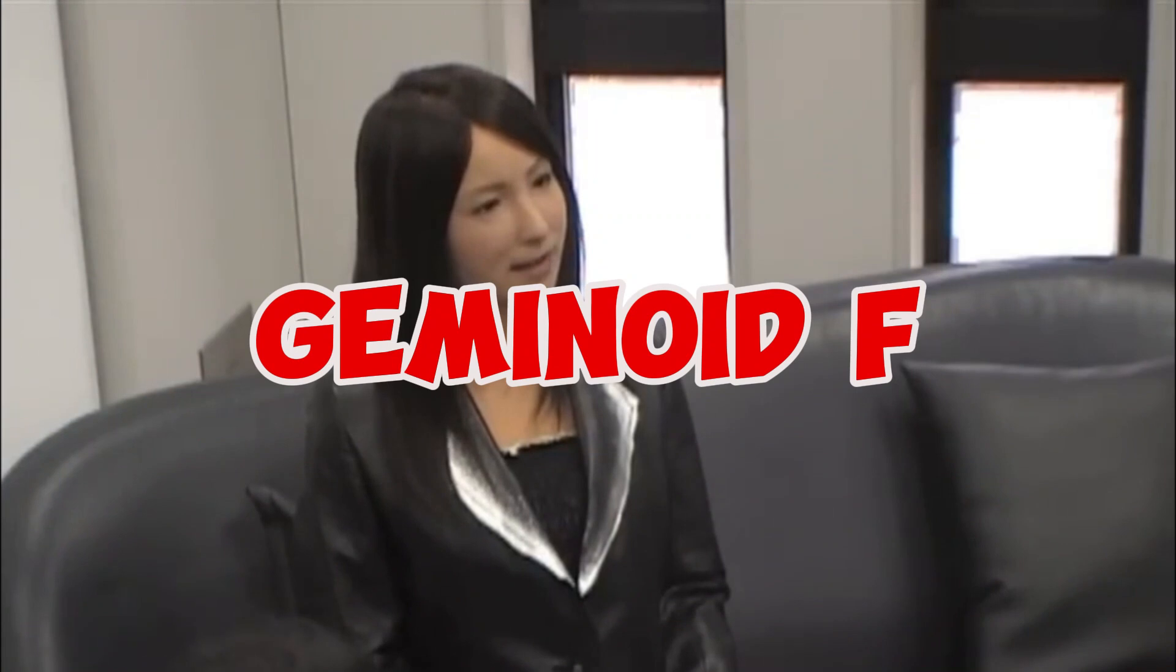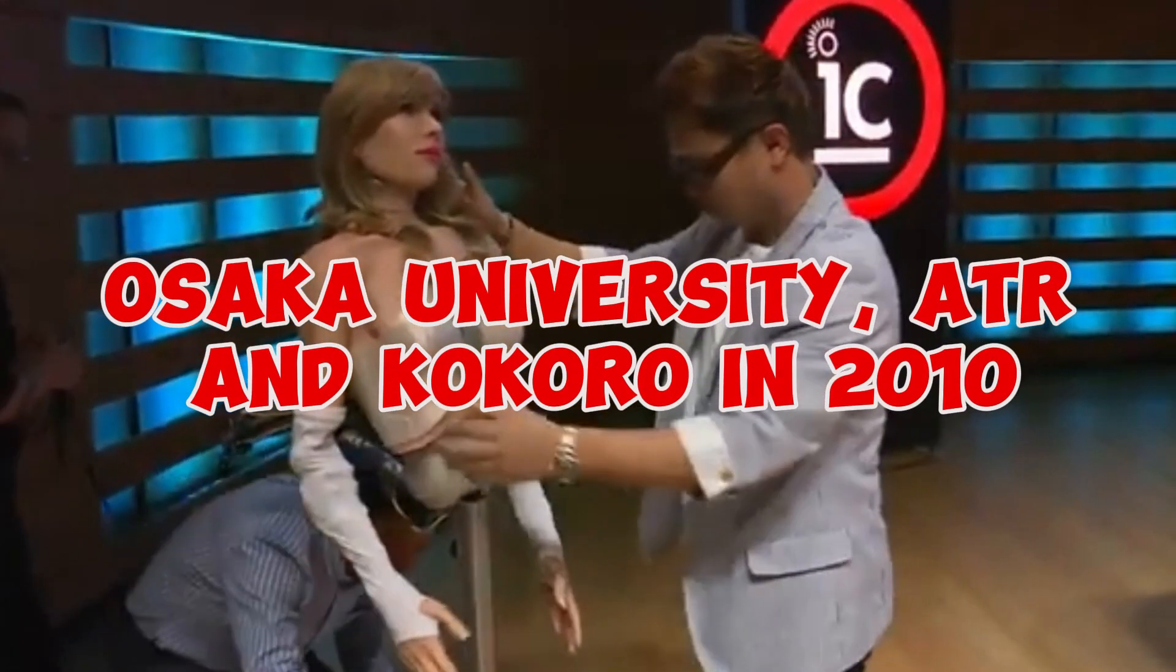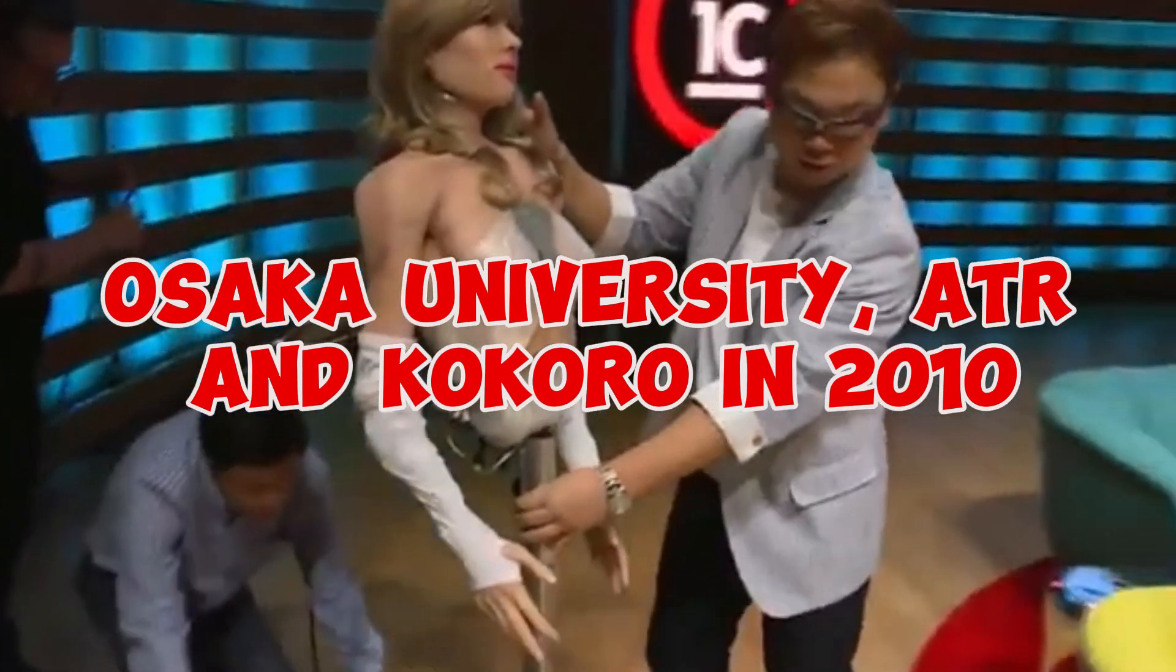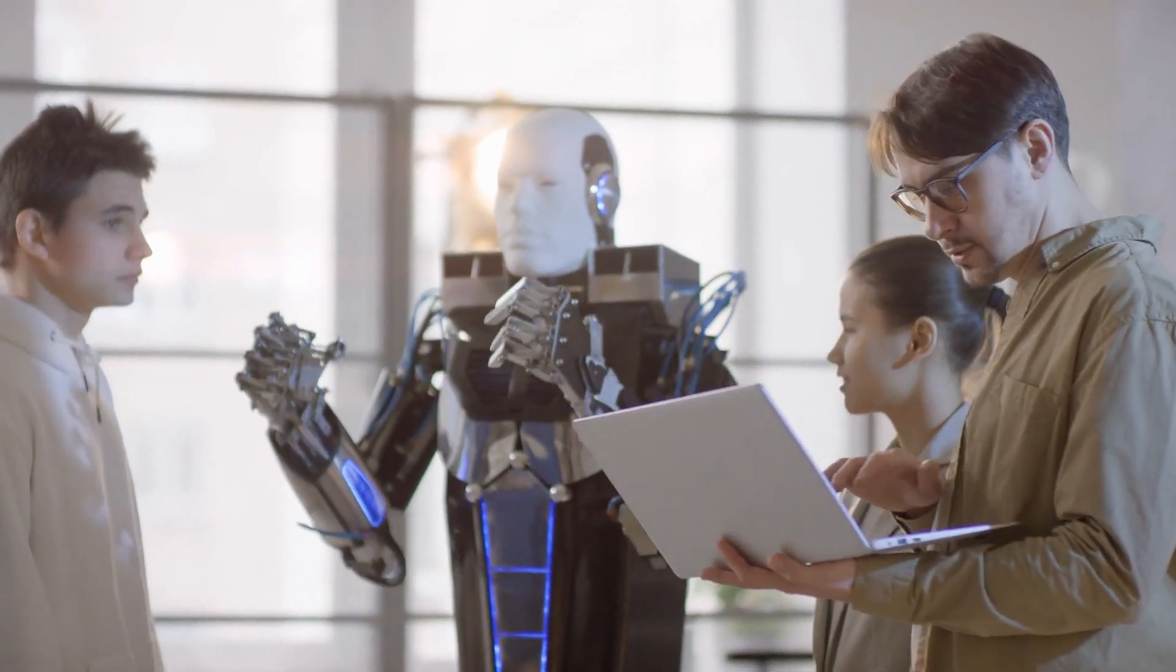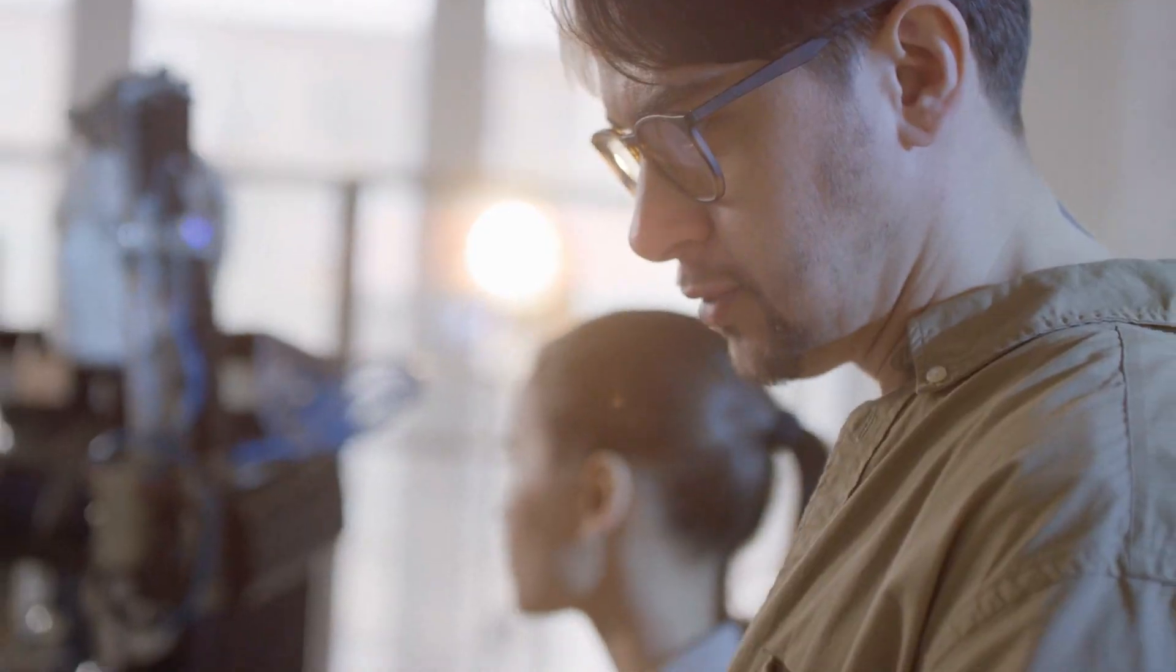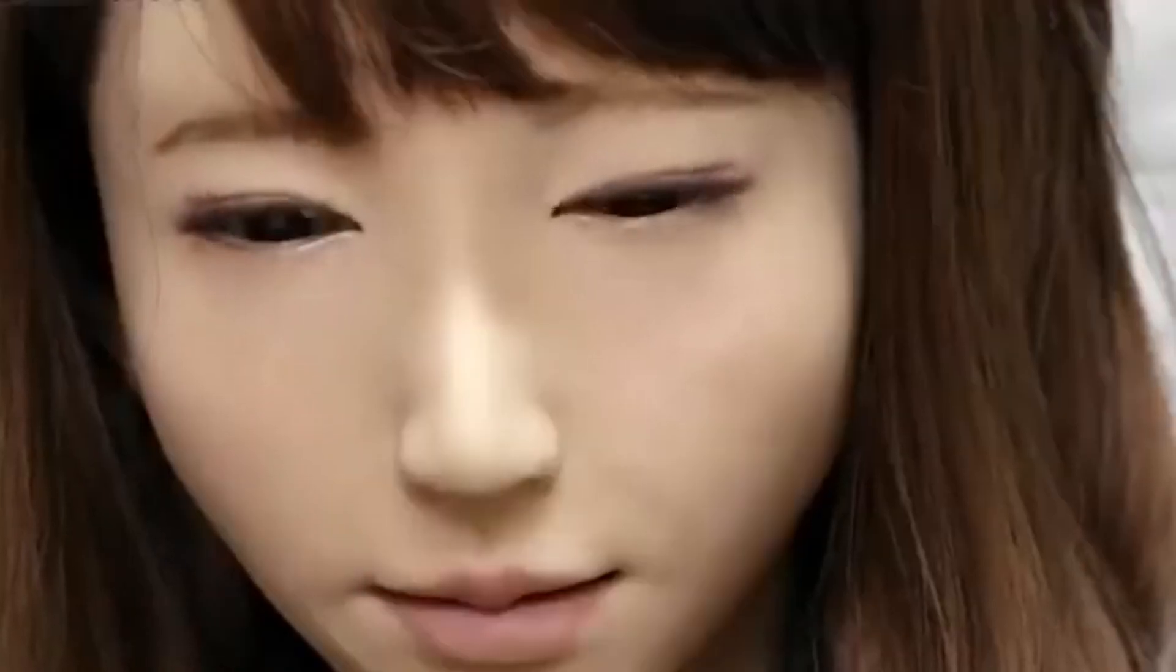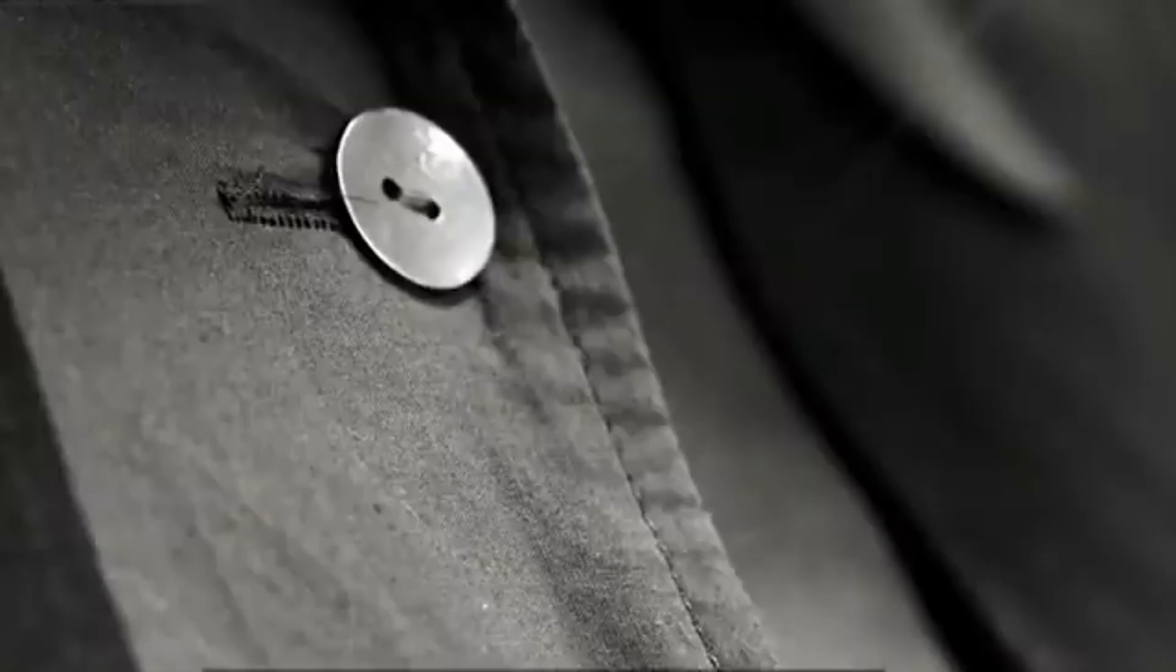Number 4. Geminoid F. Geminoid F, which was developed by Osaka University, ATR, and Kokoro in 2010, is widely regarded as the most beautiful humanoid human female robot in the world. She is a robot that has been programmed to look exactly like a Japanese woman in her 20s. She is programmed to be controlled by a remote and can grin, frown, and vary her facial expressions to imitate the behavior of the operator.